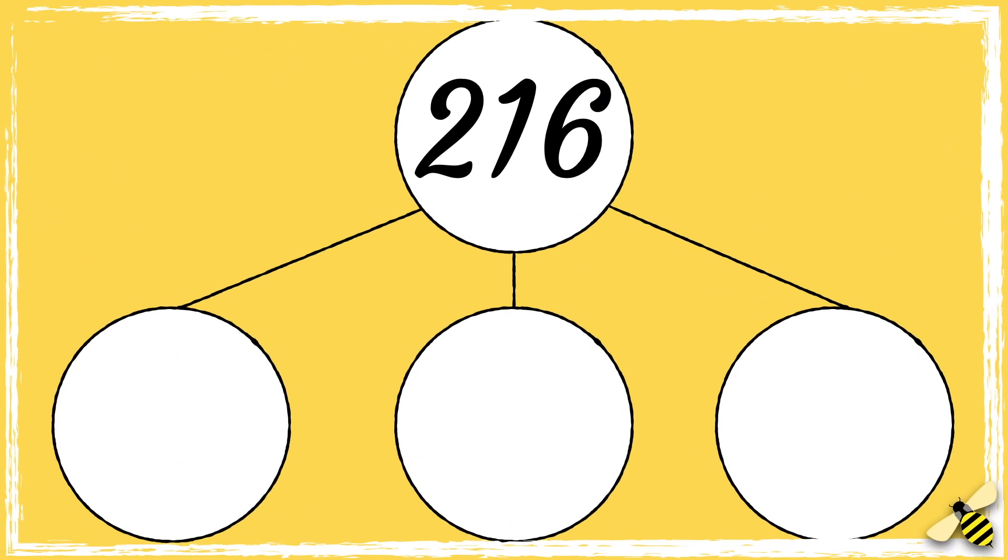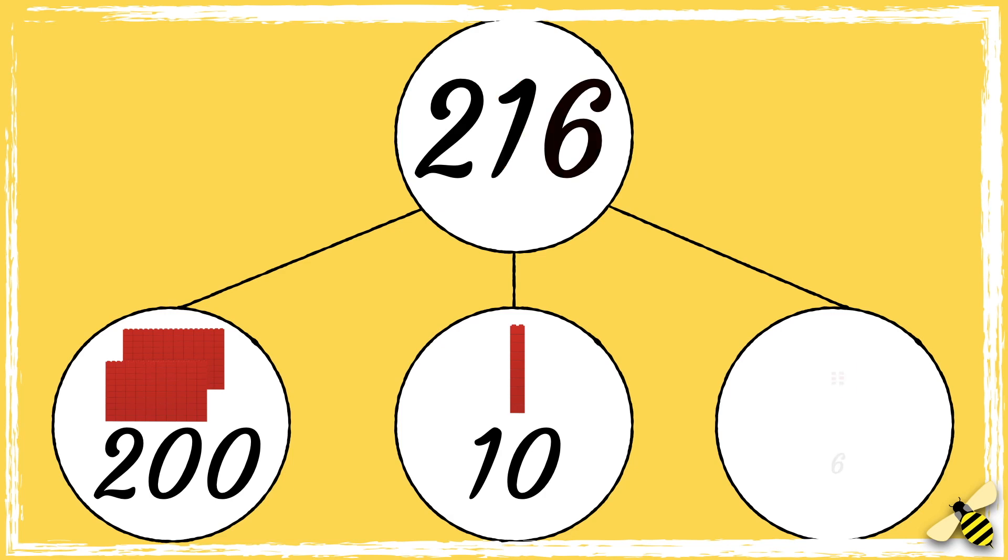Two hundred and sixteen has two hundreds, one ten, and six ones.